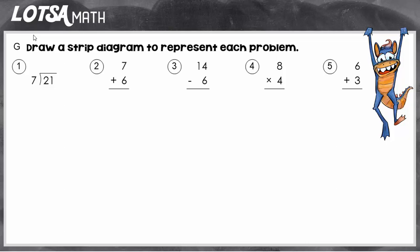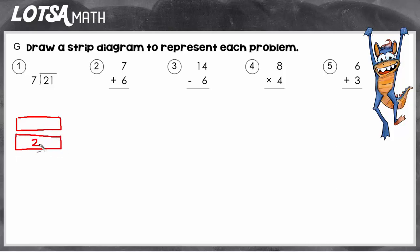So let's look at number one. Here we have a division problem. The whole in a division problem is represented by the dividend, 21. So in our whole strip, we're going to label it with 21. Now the top one is our parts strip, and I know I'm going to have 7 parts because I'm dividing 21 by 7, so I'm going to draw 7 parts.